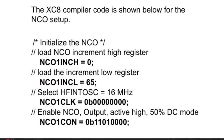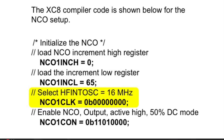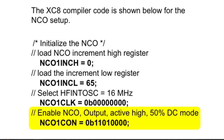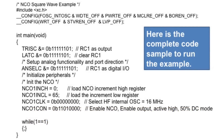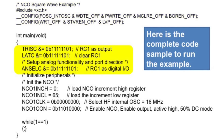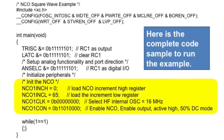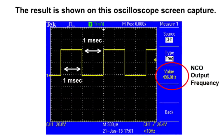The XCA compiler code is shown here for the NCO setup. First, the NCO increment registers are set up to load the calculated increment value. Then the clock source is selected. Finally, the fixed duty cycle mode, polarity, and NCO enable bits are set in the NCO control register. The complete code sample shows the configuration settings established at the top, then the I/O registers are set up, and finally the NCO settings are included. The NCO output signal captured on the oscilloscope shows the output waveform changing state every one millisecond, with the frequency measurement showing output very close to the desired 500 Hz. This will continue to run until the NCO output enable bit is cleared.